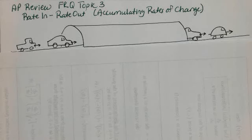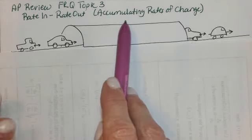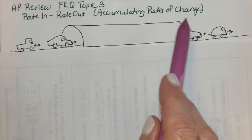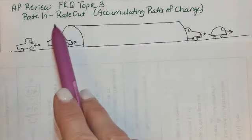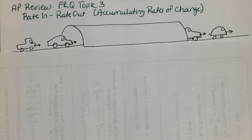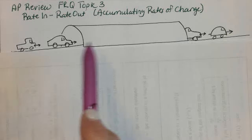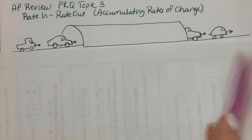We are in AP Review FRQ Topic 3. I call this 'rate in minus rate out.' I used to call it 'accumulating rates of change,' but that was a little intimidating for students, so I now call it rate in minus rate out. Let's say we have a situation where there's a tunnel and cars are entering the tunnel and cars are leaving the tunnel.